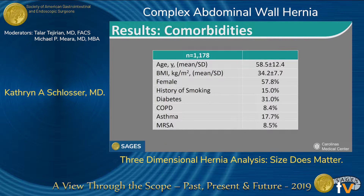We identified 1,178 patients with available CT scans. Nearly 60% were women, and many were comorbid, including diabetes, history of smoking, and COPD. 8.5% had a history of previous MRSA infection.